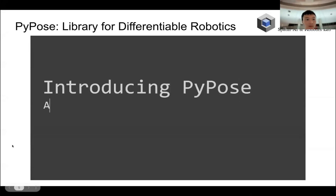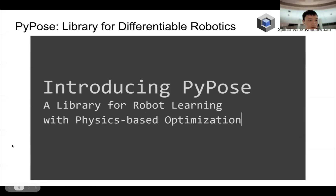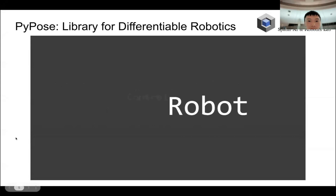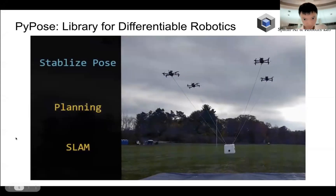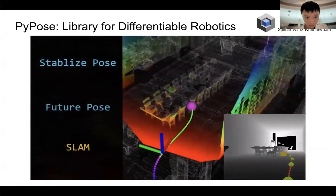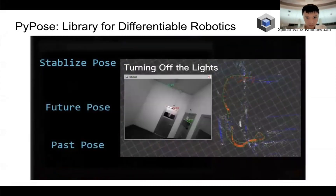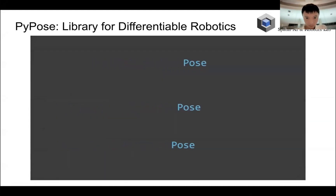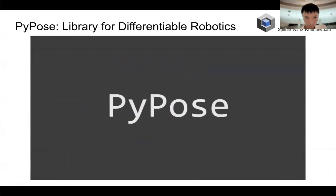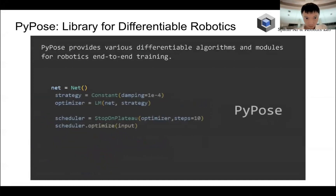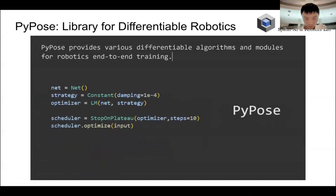Introducing PyPose: a library for robot learning with physics-based optimization. PyPose targets robotics, which mainly consists of three tasks: control, planning, and SLAM. Control is to stabilize robot pose, planning is to generate future robot pose, and SLAM is to estimate current or past robot pose. To highlight its uniqueness in robotics, we call ourselves PyPose. PyPose provides various differentiable algorithms and modules for robotics end-to-end training.